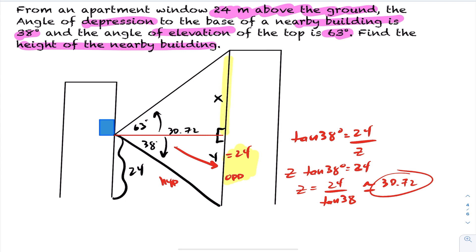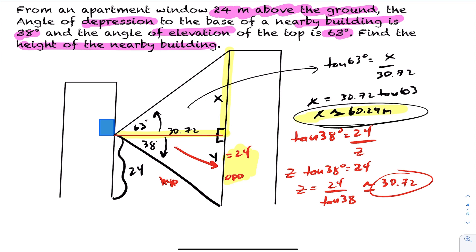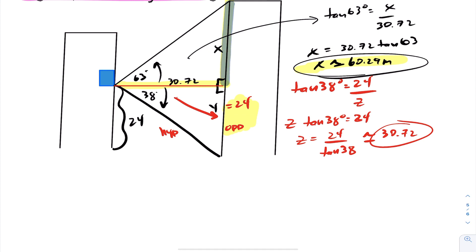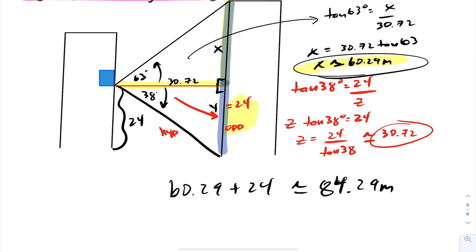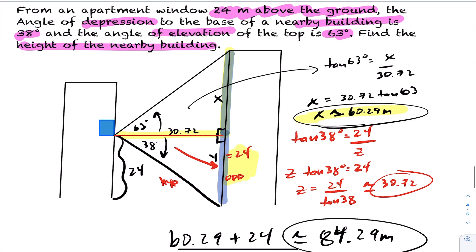Now knowing the horizontal distance is 30.72 meters, we solve for x: tan(63°) = x/30.72, so x = 30.72 × tan(63°) ≈ 60.29 meters. The total height of the nearby building is 60.29 + 24 ≈ 84.29 meters. That wraps up examples of right triangle word problems. Try to draw the diagrams, redo the questions, and check with the solutions — these are very common problems in textbooks, so it's worth studying them.